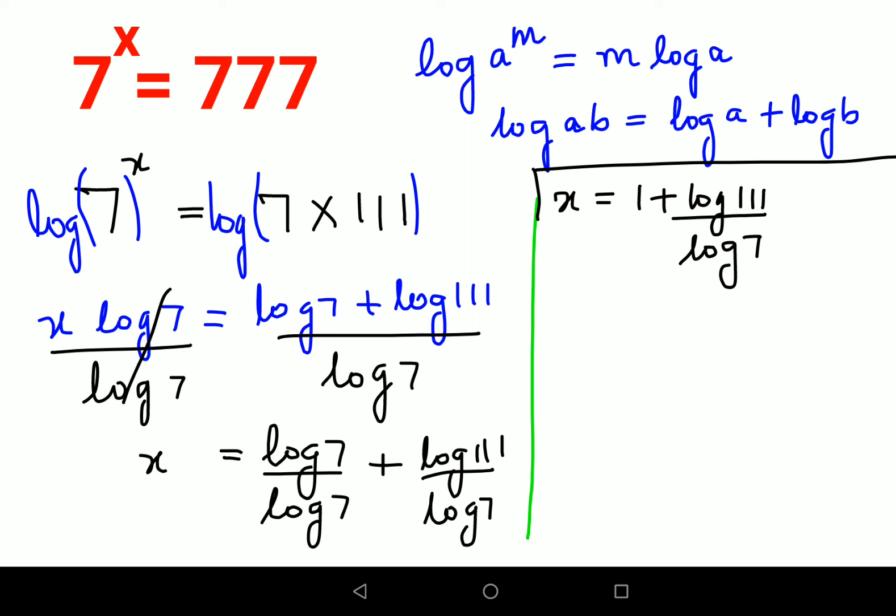Now if in case they have given you the log table, then you can put the values which is 1 plus log 111 is nothing but 2.0453 upon log 7 is 0.845. Now when you do the division you get 1 plus 2.420. So final answer is coming out to be 3.420. That is the value of your x for this particular question.